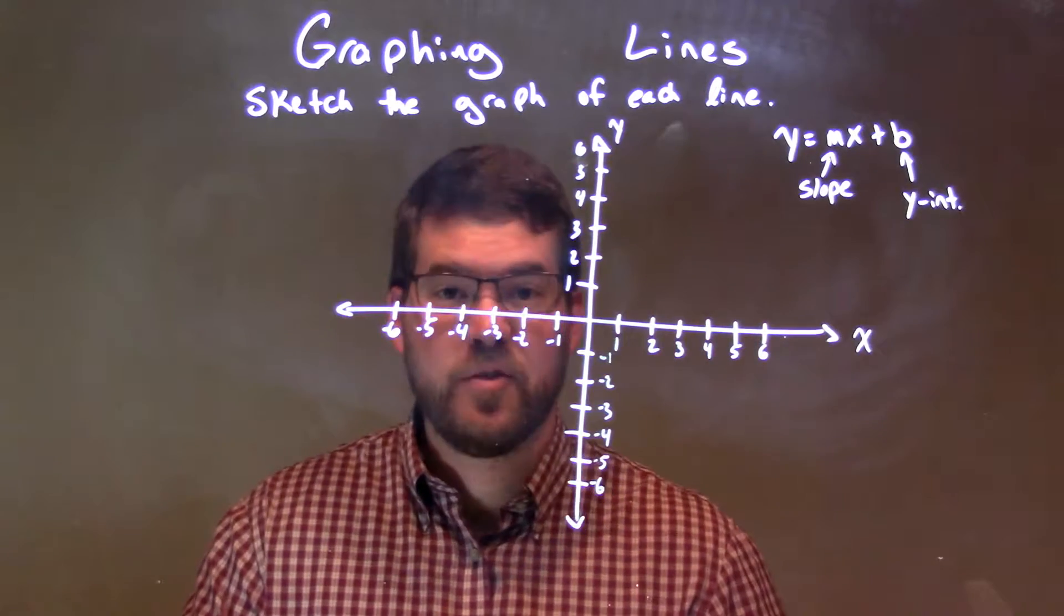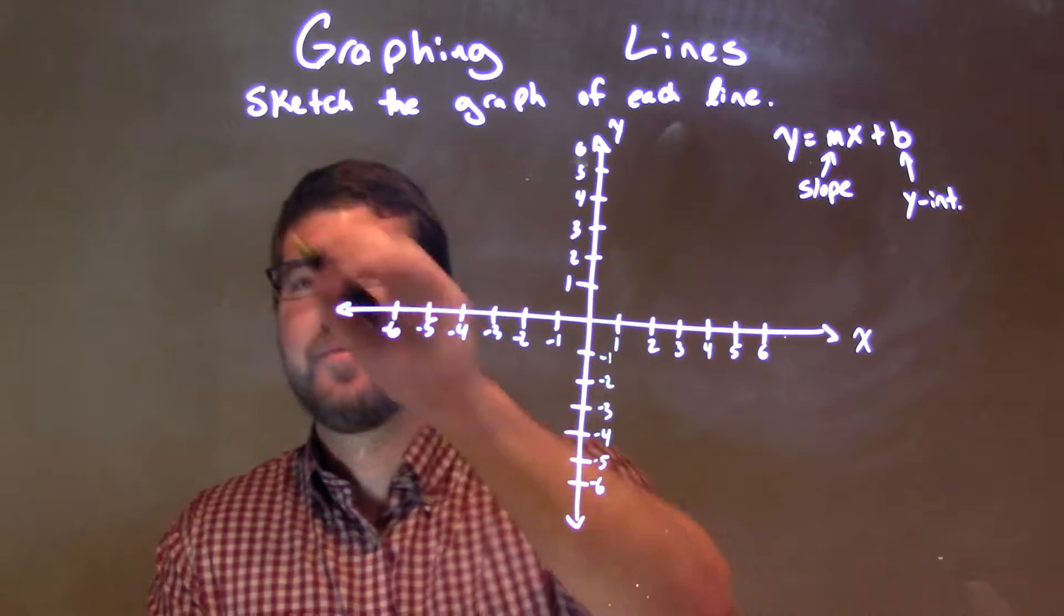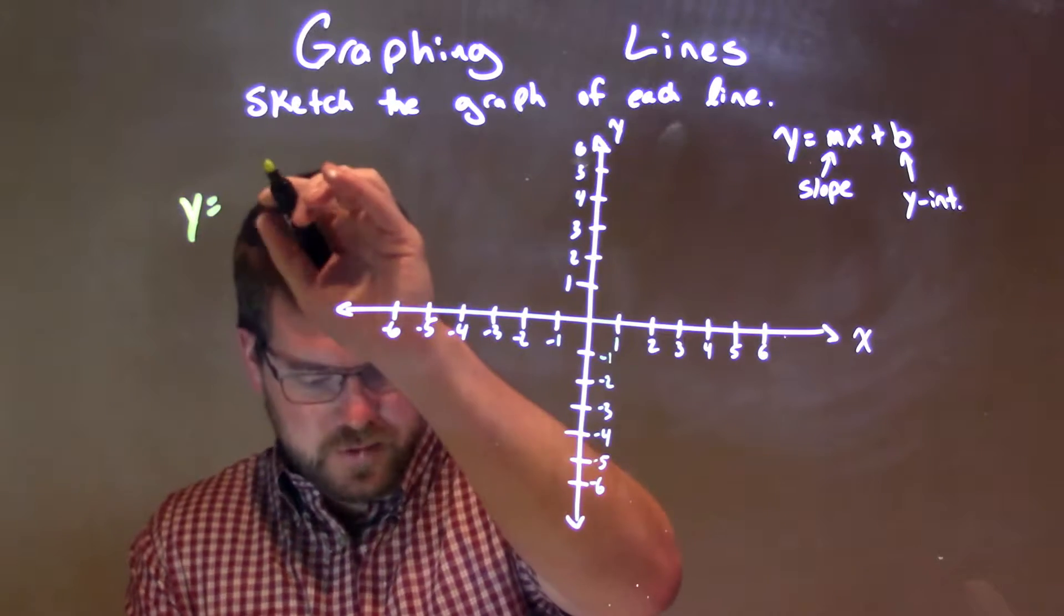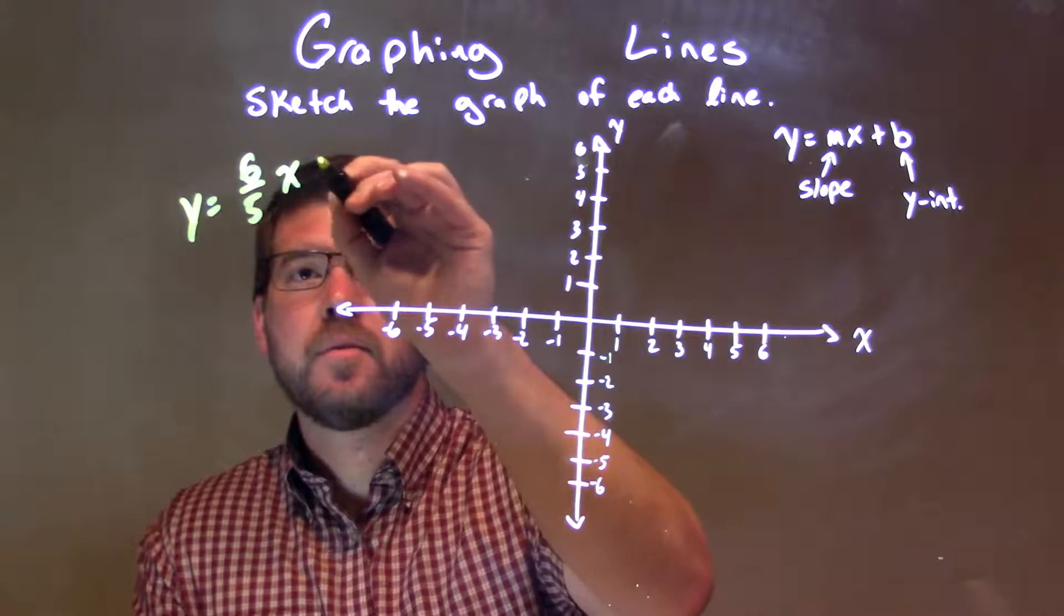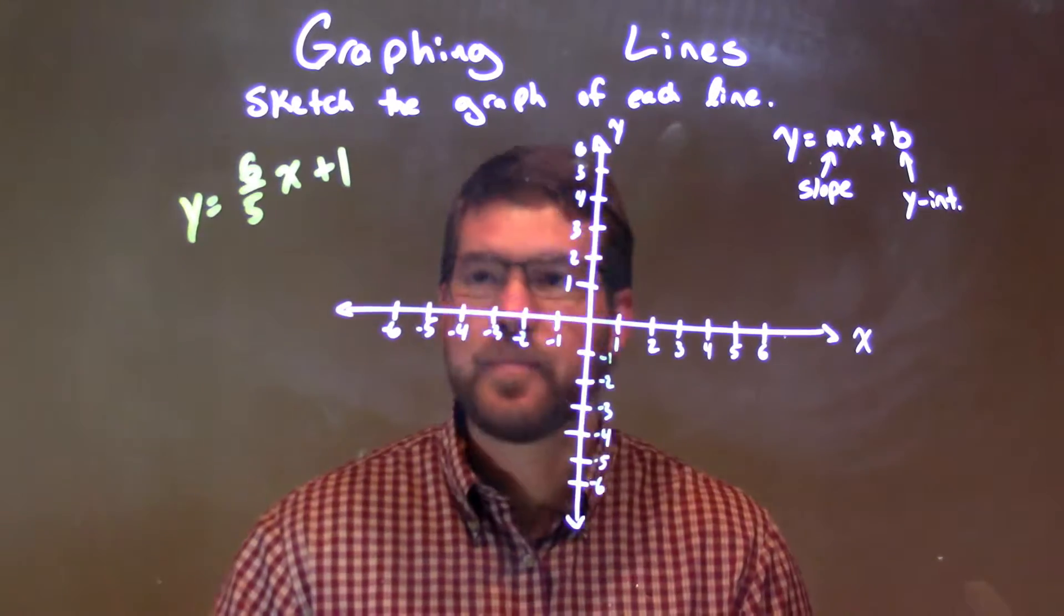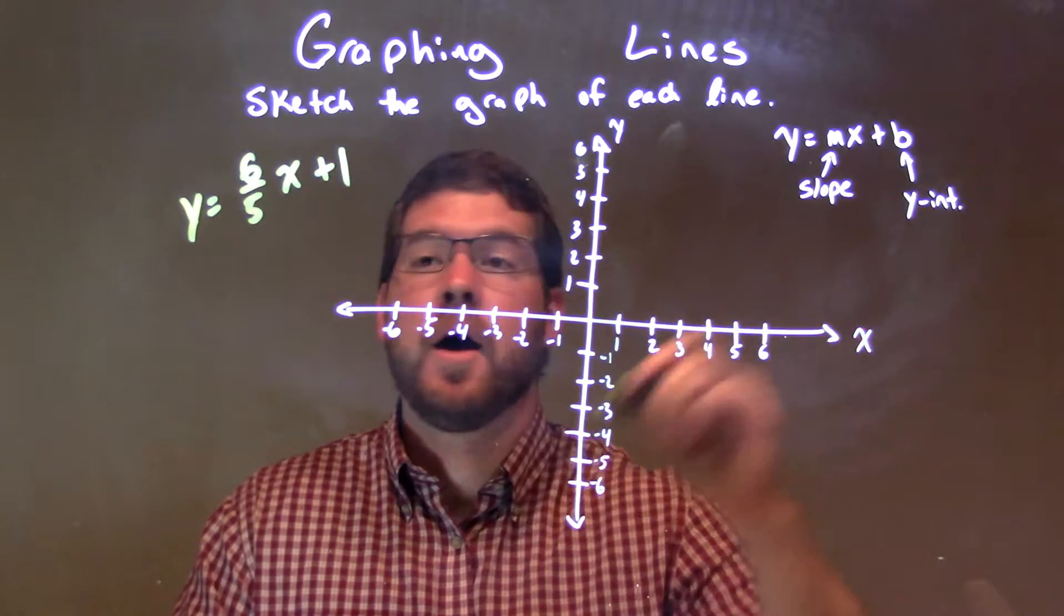I'm going to sketch the graph of each line. So if I was given this equation, y equals 6 over 5x plus 1, the main thing we're looking at here is our y-intercept.